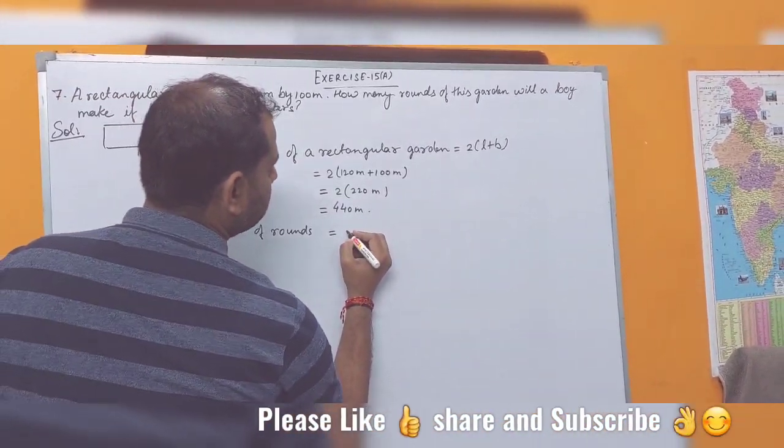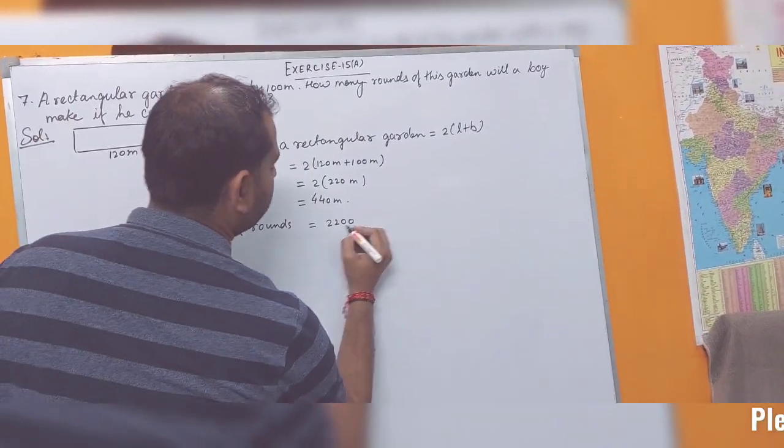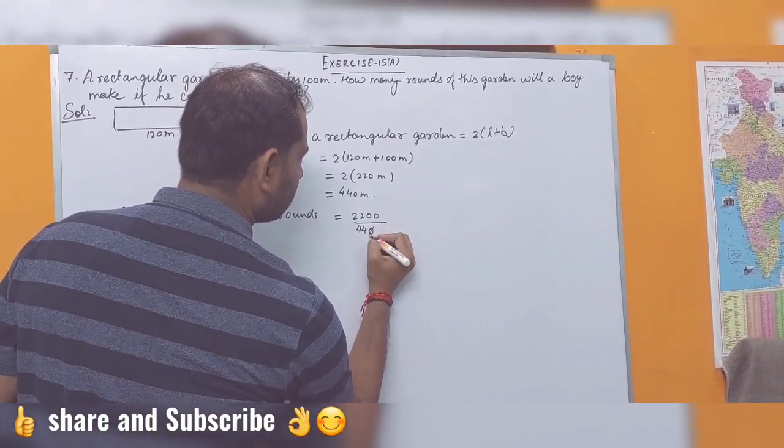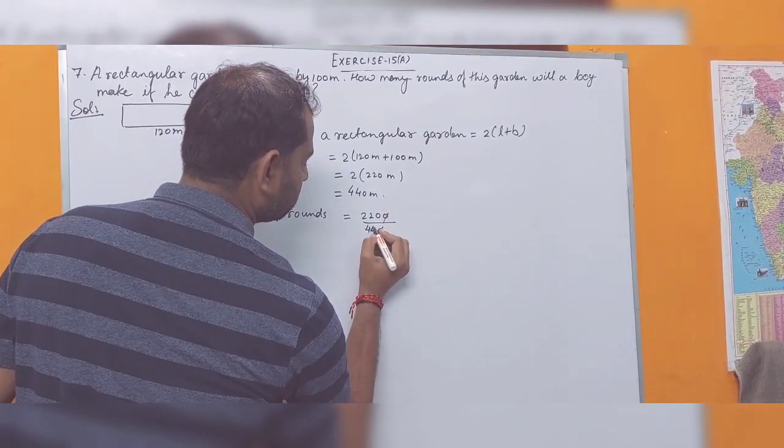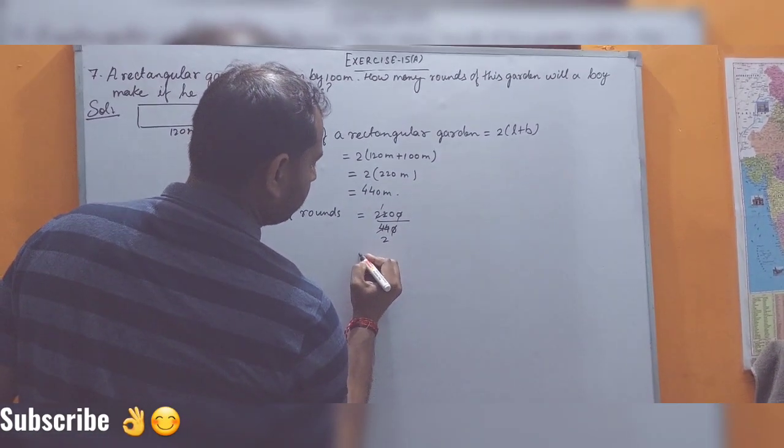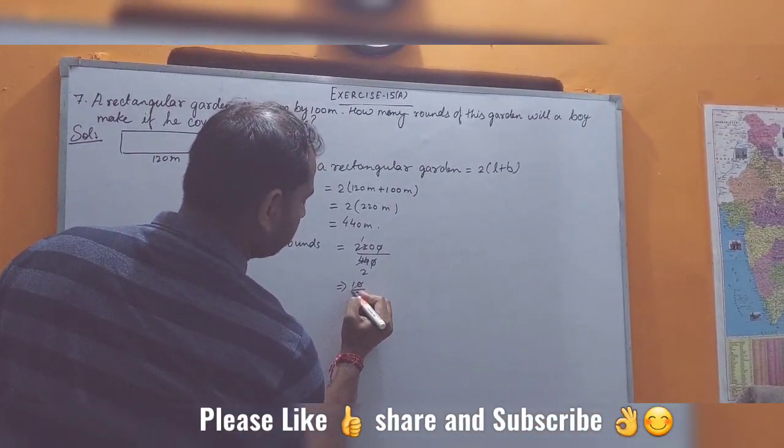Equals to 2200 meters upon 440. Okay, cancel out 22 into 2. We got 10 upon 2. Now 2 fives.